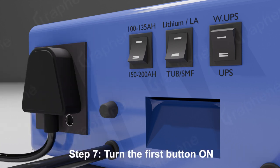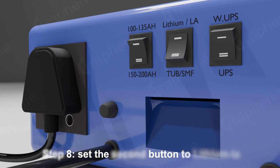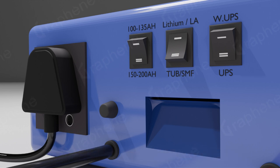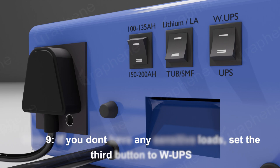Step 7: Turn the first button on. Step 8: Set the second button to lithium-LA. Step 9: If you don't have any sensitive loads, set the third button to WUPS.